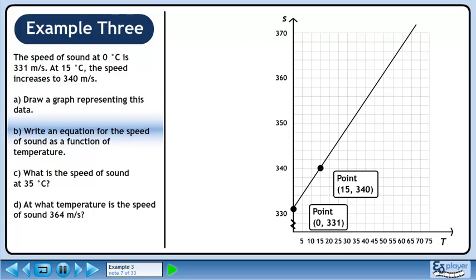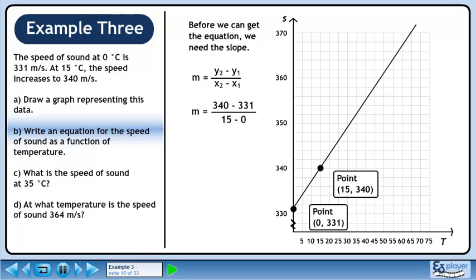In Part B, we will write an equation for the speed of sound as a function of temperature. Before we can get the equation, we need the slope. Start with the slope formula. Plug in the values from each point. This gives us 9 over 15.